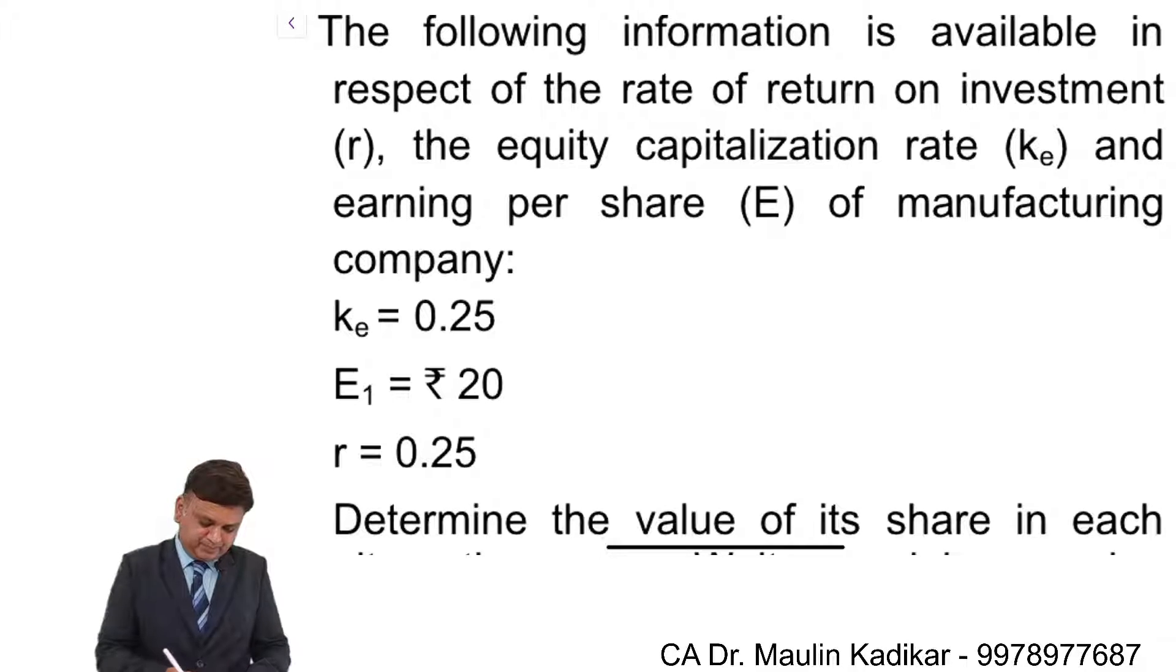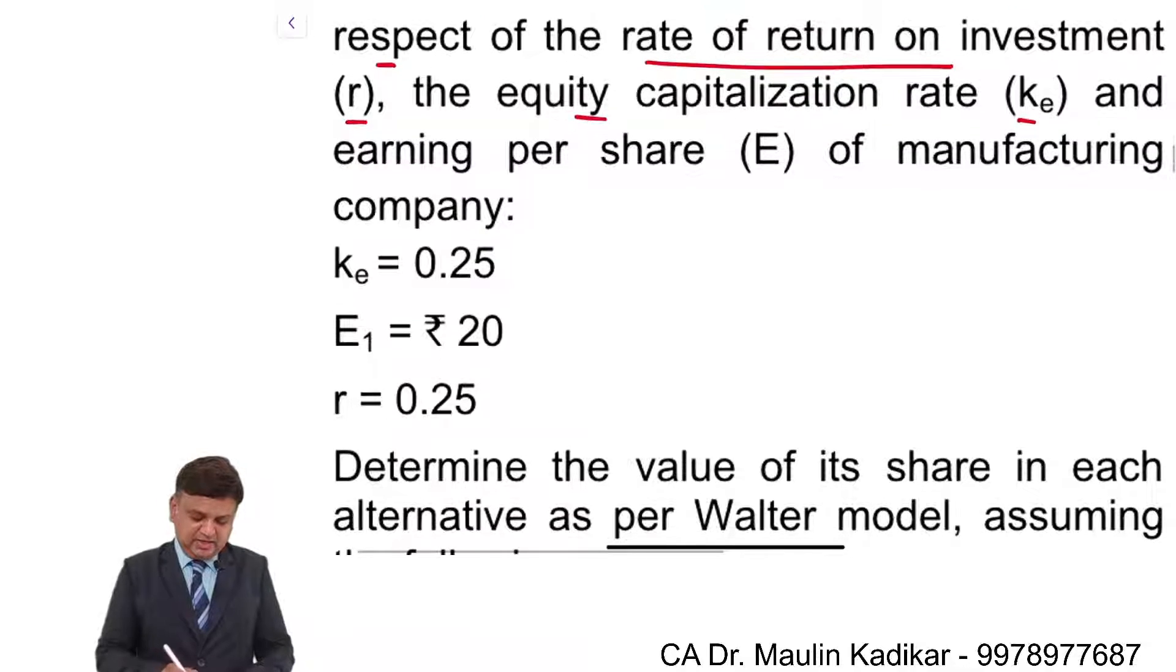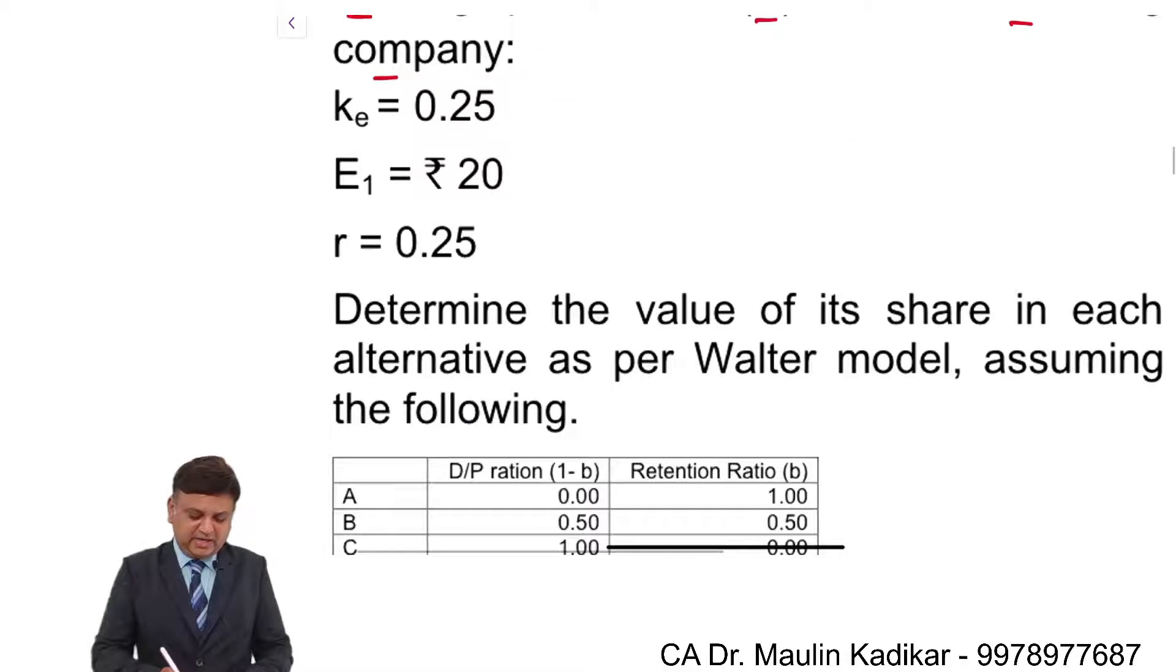Next question. The following information is available in respect of rate of return on investment (r), the equity capitalization rate (Ke), and earning per share (E) of a manufacturing company: Ke equals 0.25, E1 equals ₹20, r equals 0.25.